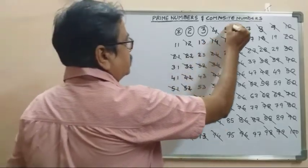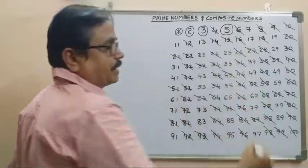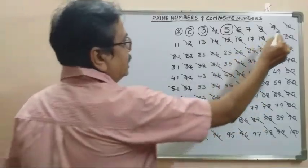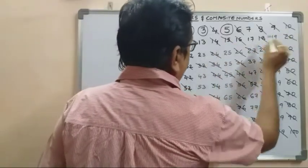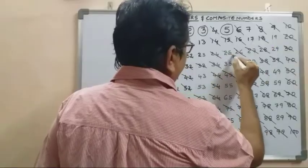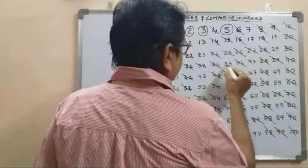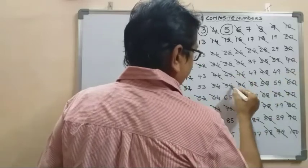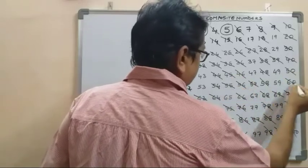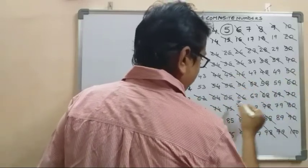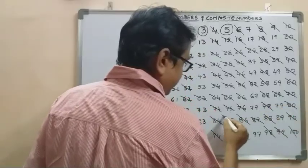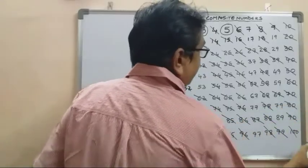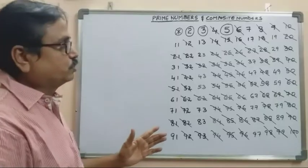Next, 5 is a prime number. Multiples of 5: 5, 10, 15, 20, 25, 30, 35, 40, 45, 50, 55, 60, 65, 70, 75, 80, 85, 90, 95, 100. We cancel all multiples of 5.